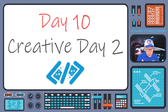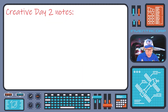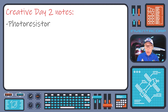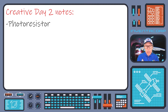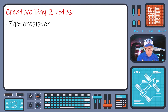Just to remind you of some of the highlights: we've encountered this photo resistor that enables us to produce output and control based on the intensity of light that's falling on the photo resistor.